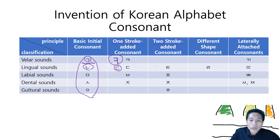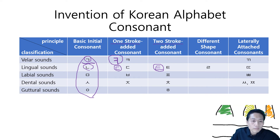And when you add one more stroke to 디귿, we get 티읕 — the name of that consonant. This is tougher than the 디귿 sound. These are all lingual sounds.